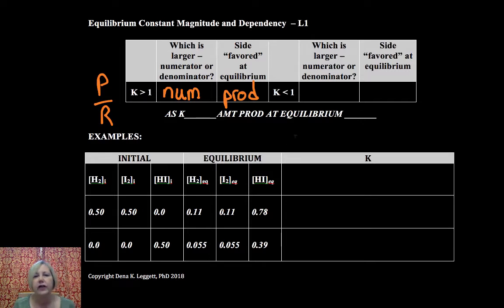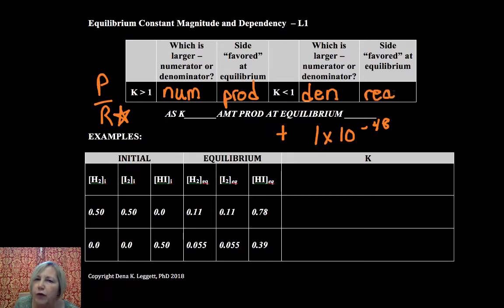If K is less than one, K will always be a positive number, but K can be numbers like one times ten to the minus 48th. I mean, teeny tiny fractions. So if you have a number less than one, that must mean that your denominator is the larger of the two. And so if our denominator is larger, then that means our reactants are favored. So overall,